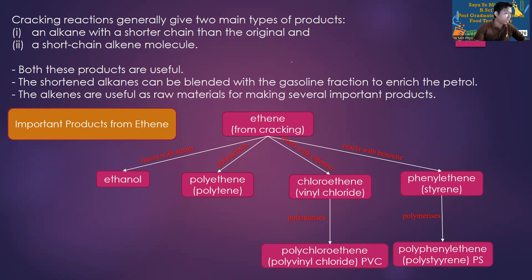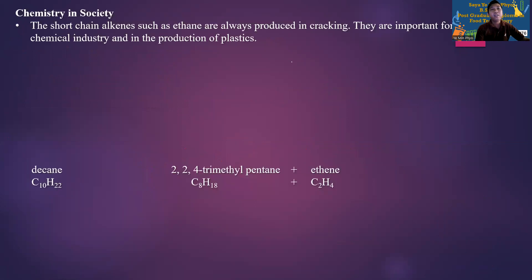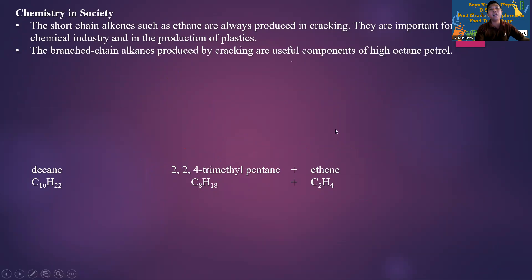The gasoline has the same antiknock property — the same evidence as that of nature, 90 percent. Branching, produced by cracking, are useful components of high octane petrol. Gasoline used as fuel to reduce engine knock and increase the pure octane rating.